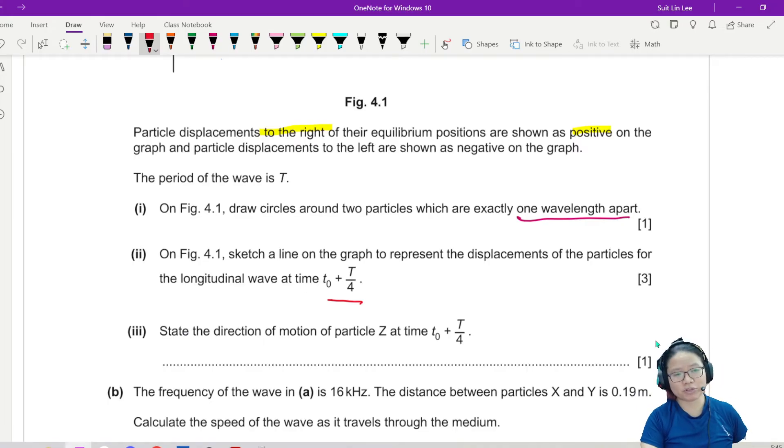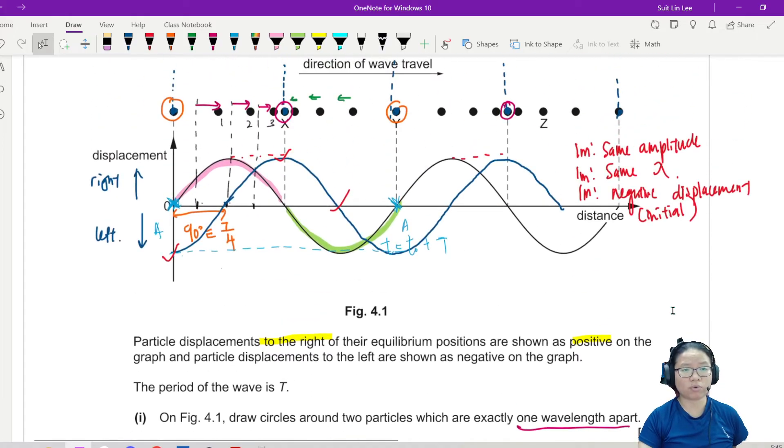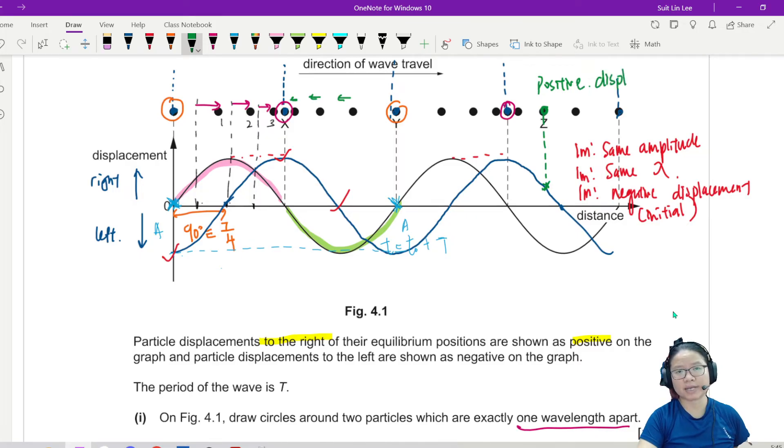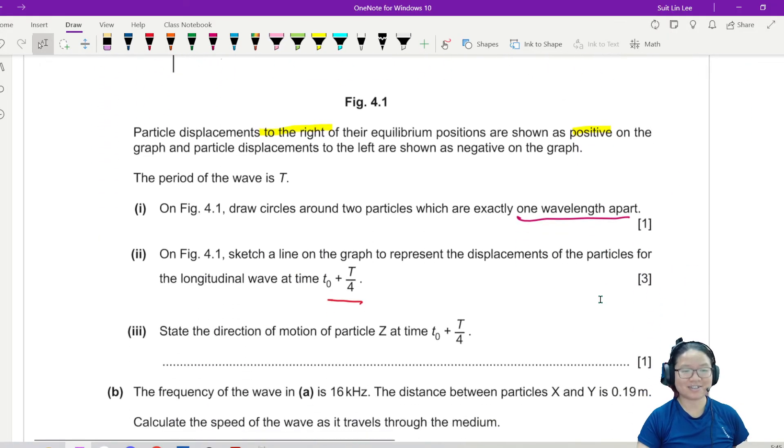Part three. State the motion of particle Z at T over 4. Where is Z? Z is here. Do you notice that Z has positive displacement in my new wave shape? I mean, if you want to, you can continue, but I'm feeling a bit meh. So at the new wave shape, the blue color one, point Z has a positive displacement. And because the displacement is positive, left or right? Right. Right is positive. To the right.